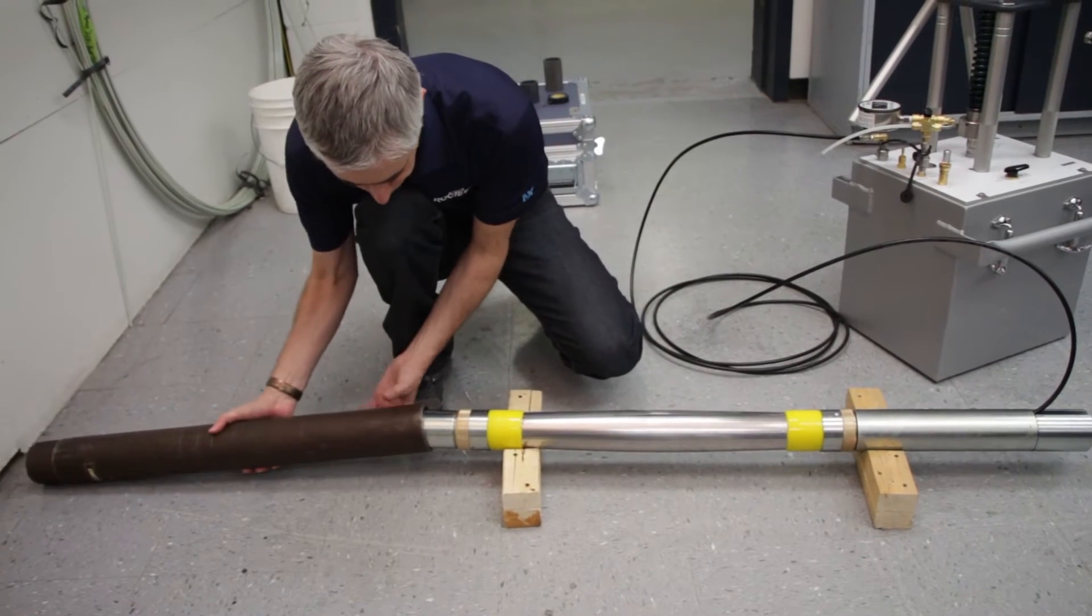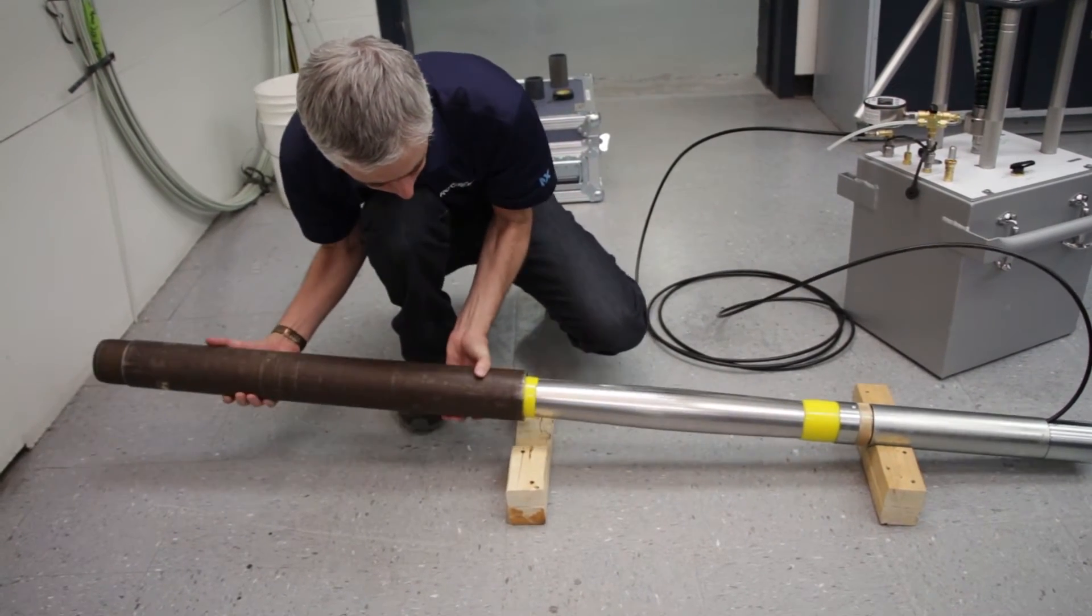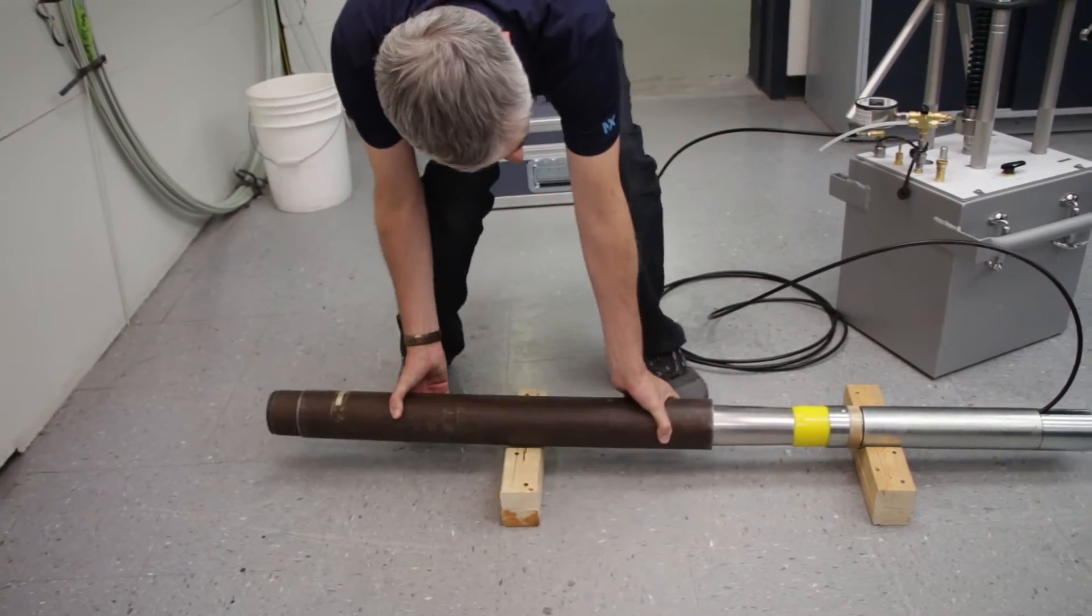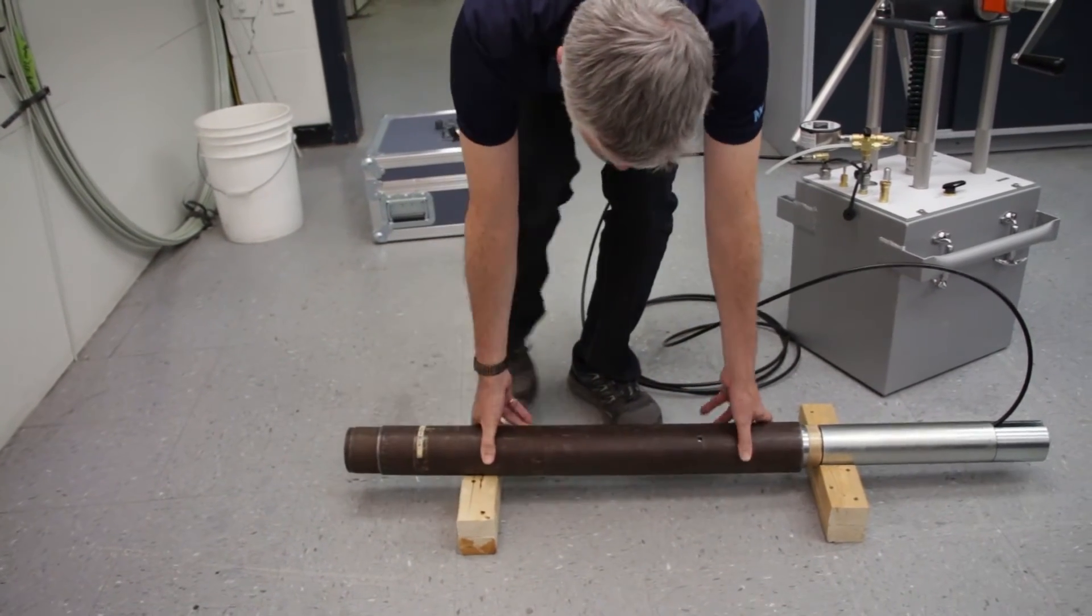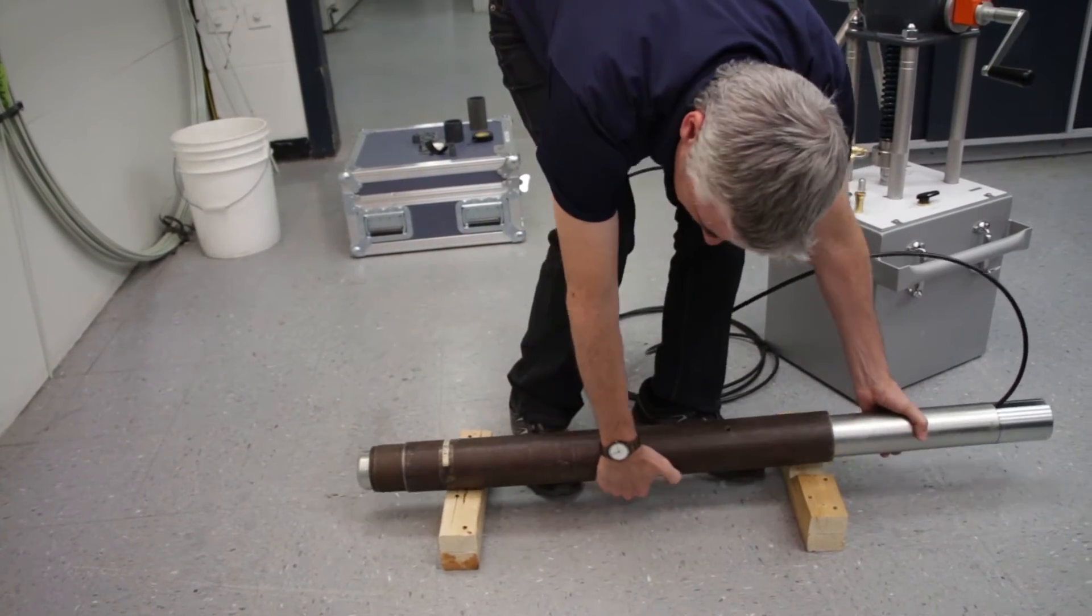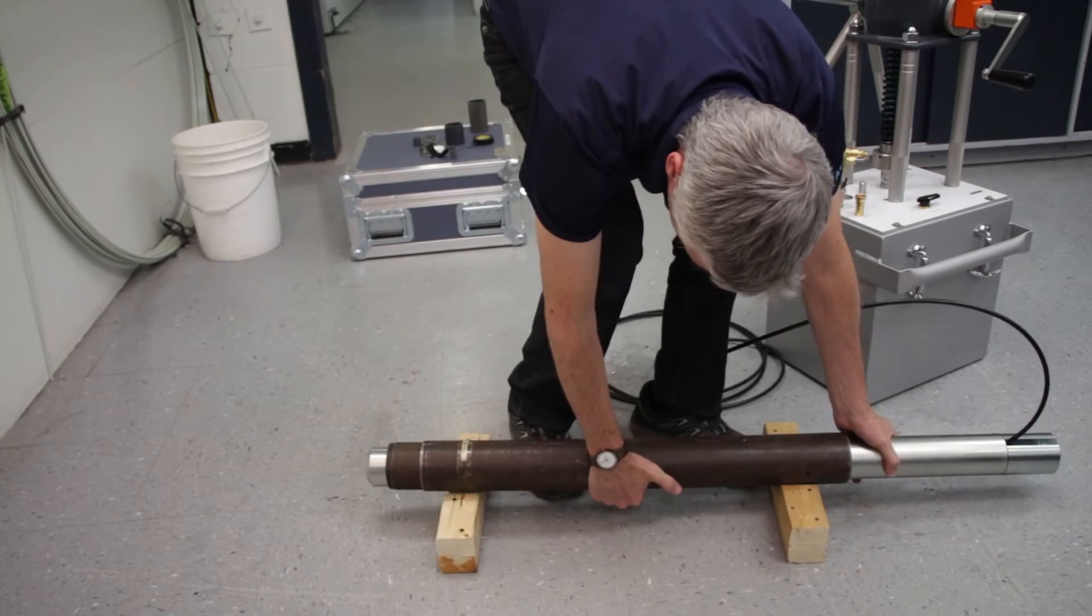Step number 3. Place the probe inside a rigid steel pipe. Use a NW or AW drill casing or equivalent for the 70 and 44 millimeter diameter probe that you are using.